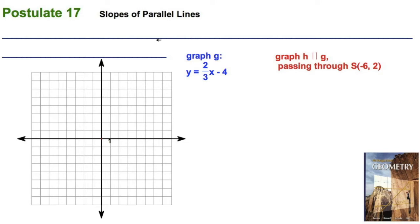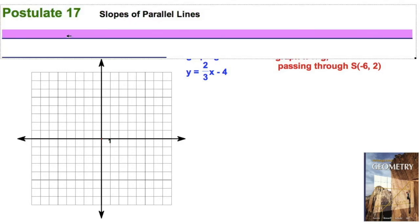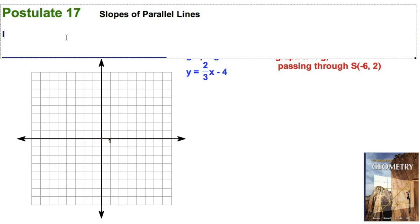In our book, that's known as postulate 17. I left it blank here so we could fill it in together. Write along with me. I guess I'm typing, but you get the idea. In a coordinate plane, two non-vertical lines are parallel if and only if they have the same slope.